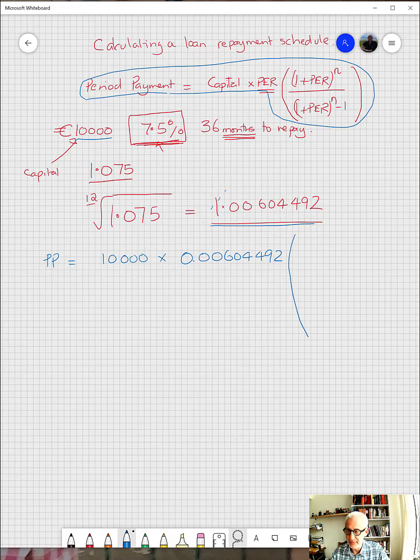We take those numbers there and we multiply them by the rest of it: 1 plus 0.00604492, which we then raise to the power of 36 because that's the number of periods.